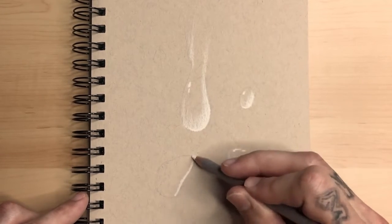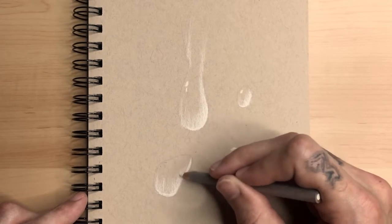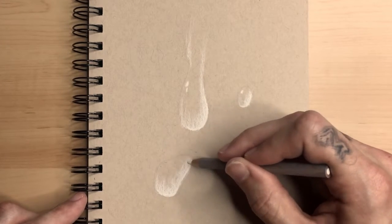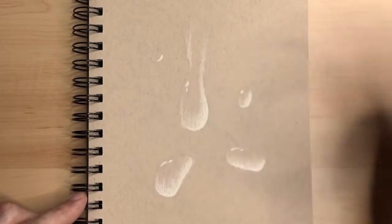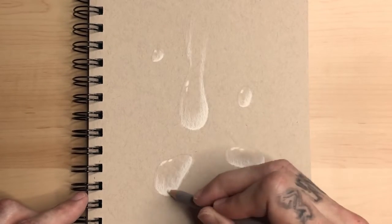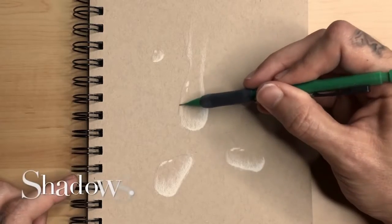I use a General's white charcoal pencil and do a really heavy white around the edges on the bottom. And then I put two little dots or a dot coming from the main light source, the beam through to show the reflection.